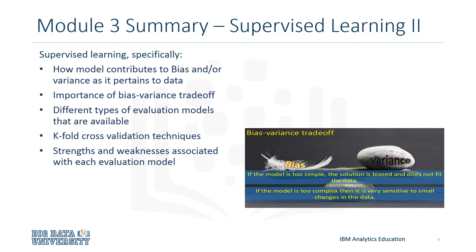In Module 3, you learned how a model contributes to bias and or variance as it pertains to data, as well as the importance of bias-variance trade-off, so as to have an idea of how to achieve such a balance. Also discussed were the different types of evaluation models that are available, such as test and training on the same dataset and train-test split. You learned about K-fold cross-validation techniques and the concepts behind how it works, and finally about the strengths and weaknesses associated with each evaluation model in a given situation.